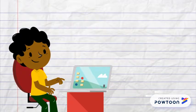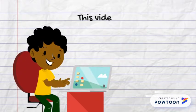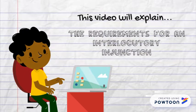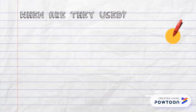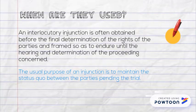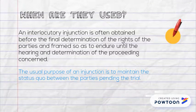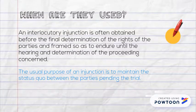Hi, my name is Lauren Richards and today I'm going to be explaining to you the requirements for an interlocutory injunction in intellectual property cases. So when are interlocutory injunctions used? Well, an interlocutory injunction is an injunction obtained before the final determination of the rights of the parties and framed so as to endure until the hearing and determination of the preceding concern. The usual purpose of an injunction is to maintain the status quo between the parties pending the trial.